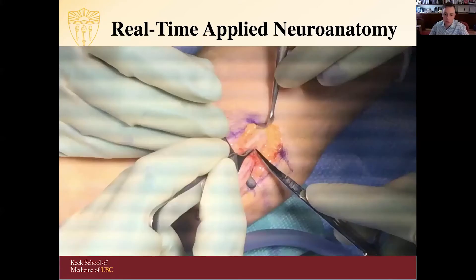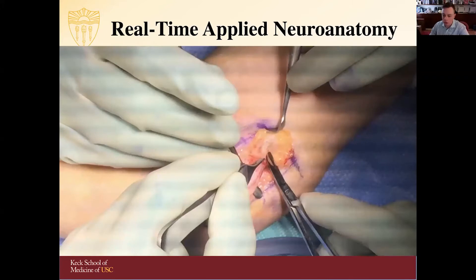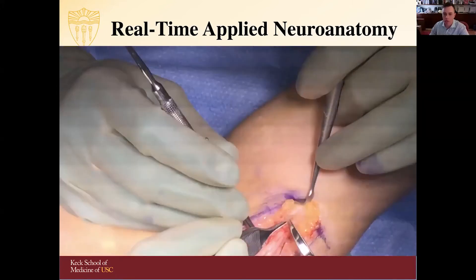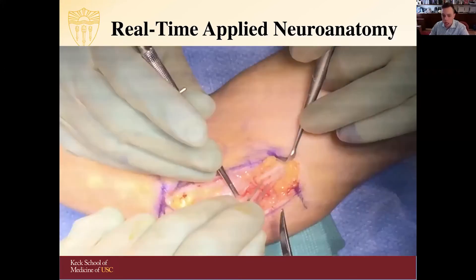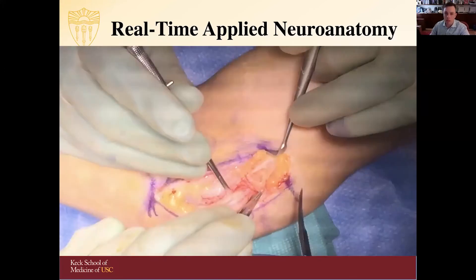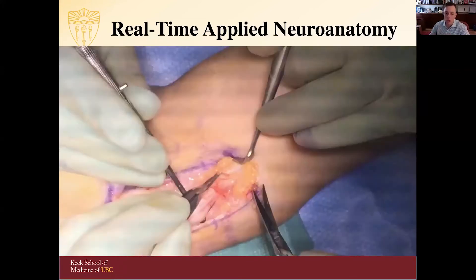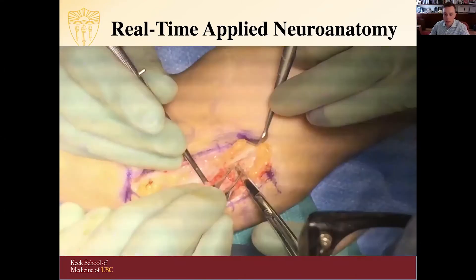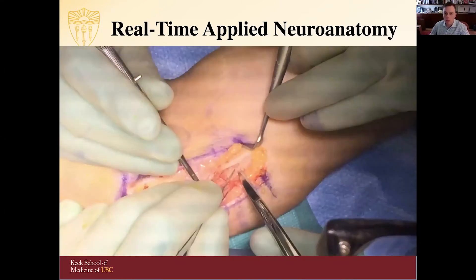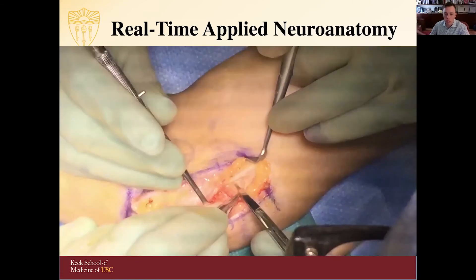In peripheral nerves, we all learn in anatomy lab about the ulnar nerve. But as you do these dissections — working through the arcade of Struthers, Osborne's band, and other areas of compression such as the FCU — these are all things you'll need to know, understand, and identify in real time. These are some of the things we've used in the past.